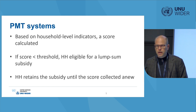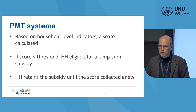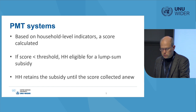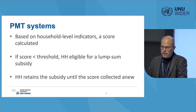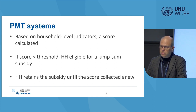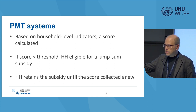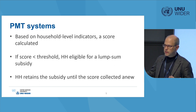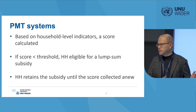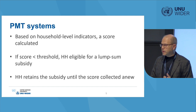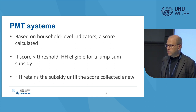What are these proxy means test (PMT) type benefits? These are benefits where eligibility is calculated based on household-level indicators measuring assets and household composition. A score is created, and if the score falls below a certain threshold, the household is deemed poor and eligible for a benefit. If conditions change, eligibility can only be re-tested whenever new household data is gathered — every third or fifth year — so if somebody loses income in the meantime, the benefit system does not adapt.